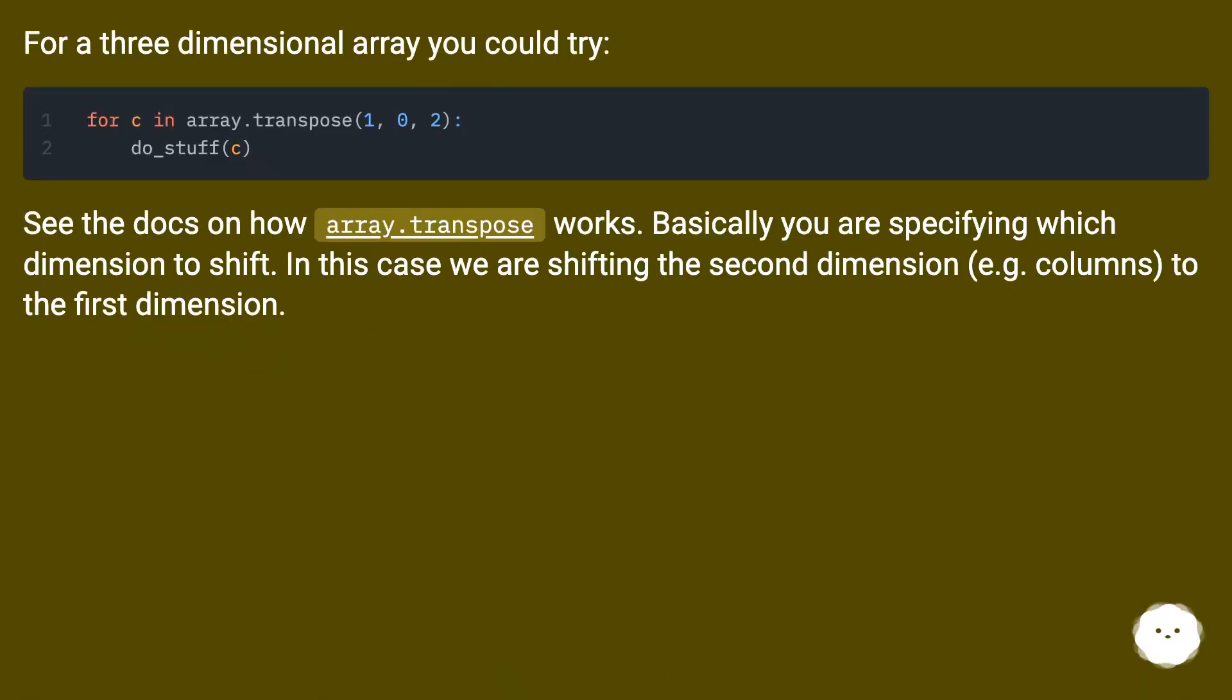For a three-dimensional array, you could try array.transpose. See the docs on how array.transpose works. Basically, you are specifying which dimension to shift. In this case, we are shifting the second dimension, e.g., columns, to the first dimension.